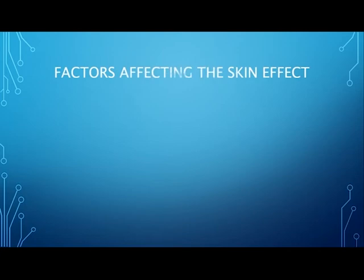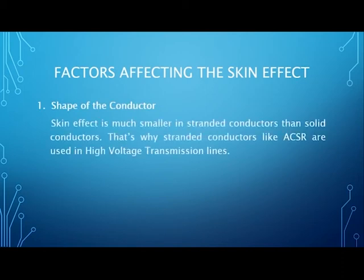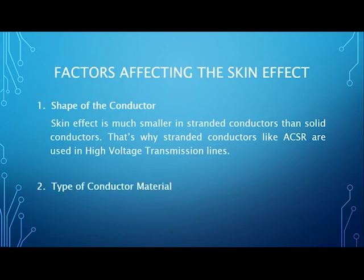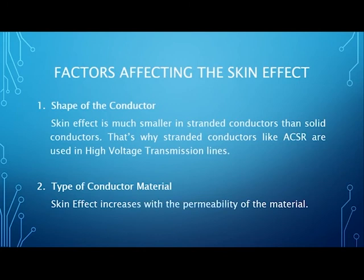Some factors that affect the skin effect: First, the shape of the conductor — skin effect is much smaller in stranded conductors than solid conductors. That is why stranded conductors like ACSR are used in high voltage transmission lines, as their non-uniform surface results in less skin effect. Second, the type of conductor material — skin effect increases with the permeability of the material, which is the extent to which a material is magnetized when a magnetic field is applied.